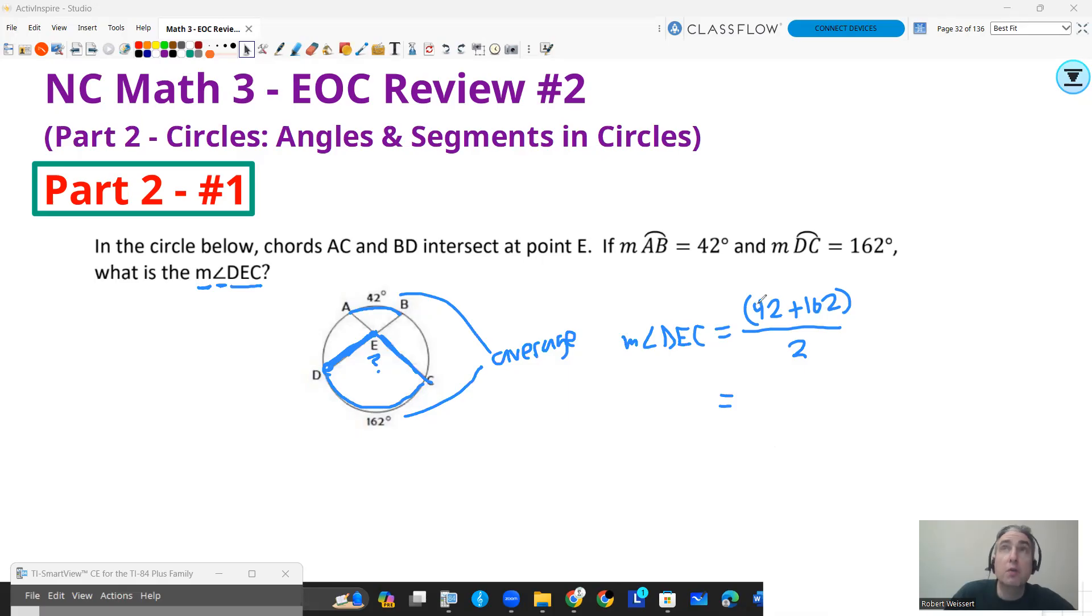So the measure of angle DEC is simply going to be 42 plus 162. I'm going to add those numbers together first, and then take that result and divide by two. So 42 plus 162, that's going to be 204. Always double-check your work in a calculator. 204 divided by 2 is going to be 102. So that's going to be 102 degrees for that angle. That's all you got to do on that question.